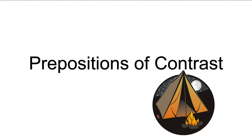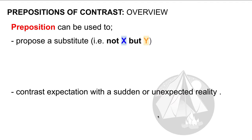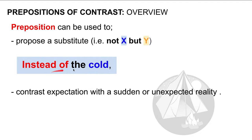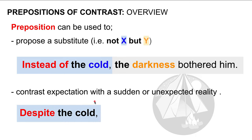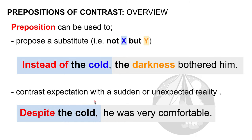Today I will be presenting on prepositions of contrast. Let's do a quick overview of what we're going to be looking at today. Prepositions can be used to propose a substitute — that is, not X but Y. For example, instead of the cold, the darkness bothered him. We can also use prepositions to contrast an expectation with a sudden or unexpected reality. Despite the cold, he was very comfortable.